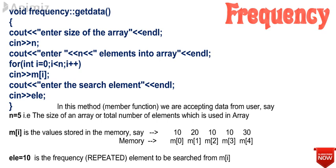In this member function we are accepting data from the user, storing it in memory locations, and asking the user to enter the element for which the frequency — that is, the repeated element — is to be searched in m[i].